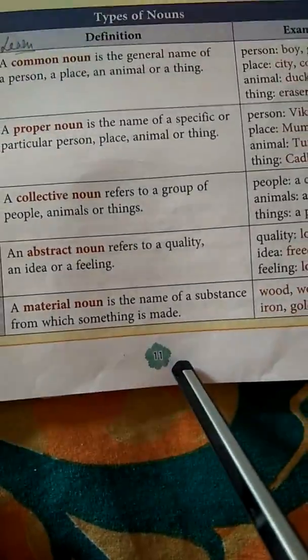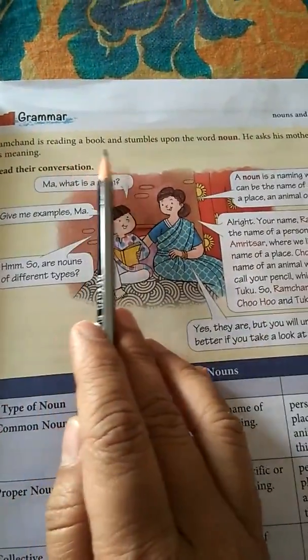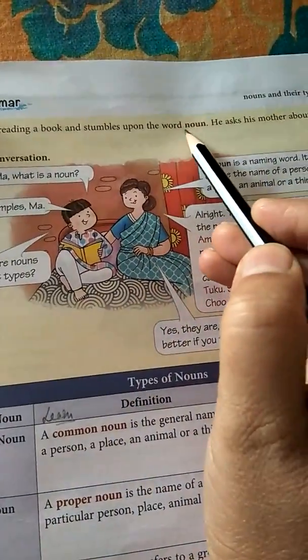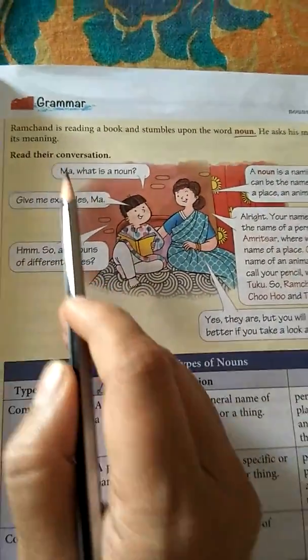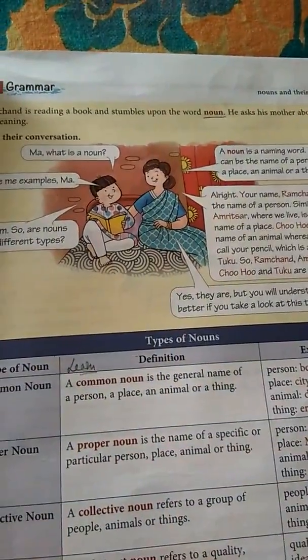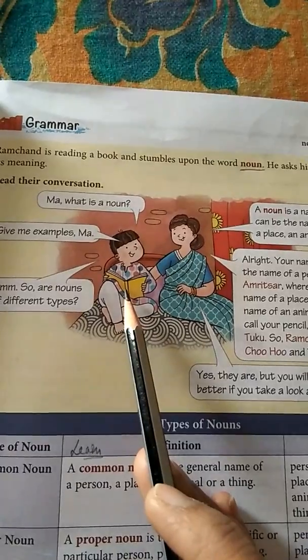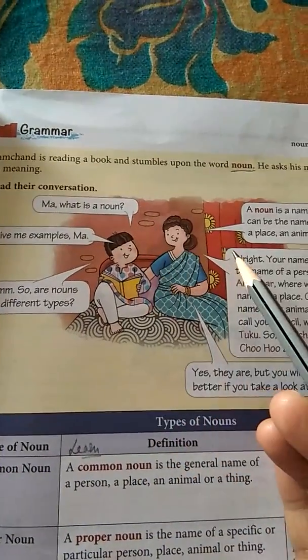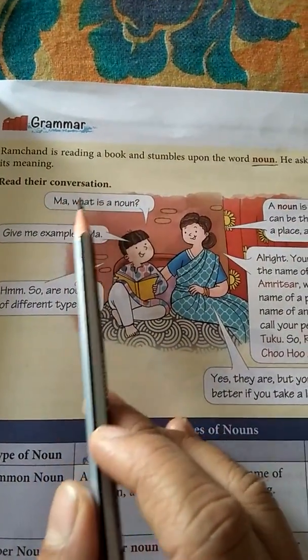Now, children, we come to the second exercise, page number 11. That is the grammar part. Ramchand is reading a book and stumbles upon the word 'noun.' He asks his mother about its meaning. We have already discussed what a noun is, and now Ramchand is also studying about nouns. He asks his mother, 'What is a noun?' So now let us read the conversation.